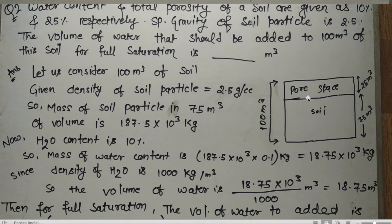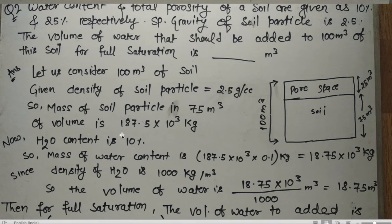Total soil is 100 meter cube. Since porosity is 25%, there is 25 meter cube of pore space and 75 meter cube is solid soil. The density of the soil is 2.5 gram per centimeter cube. The mass of particles in 75 meter cube is: mass = density × volume = 2.5 × 75 = 187.5 × 10³ kg.